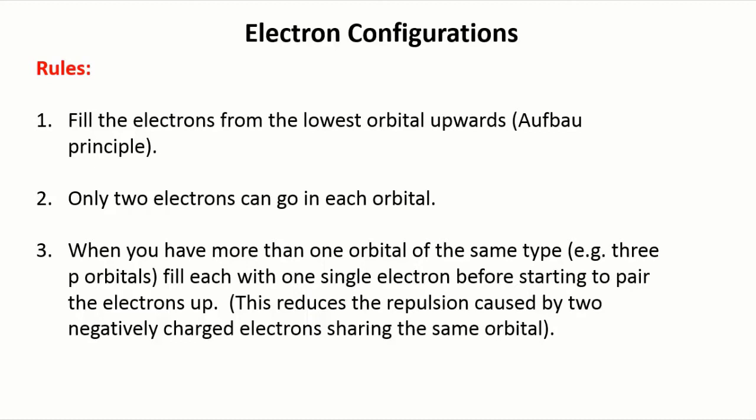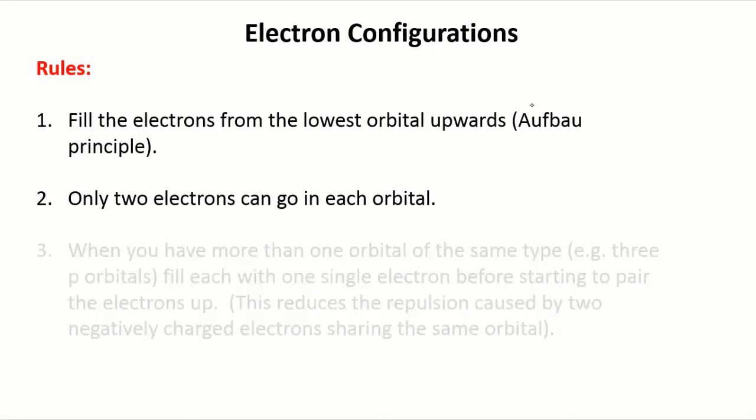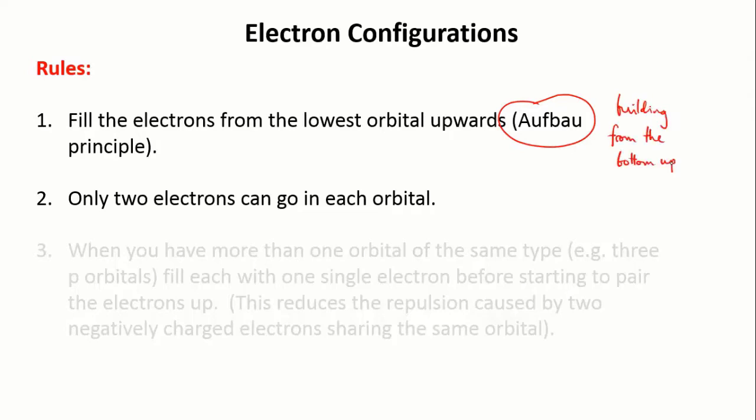There are a few simple rules that you need to follow. The first rule is to start at the bottom and work your way up. Put the electrons in the lowest energy orbital first and work up to higher energy orbitals one by one. This is called the Aufbau principle. The German word Aufbau means to build up. Second, as we've just been discussing, each orbital may only have two electrons in it. So once you've filled an orbital with two electrons, move on to the next one.